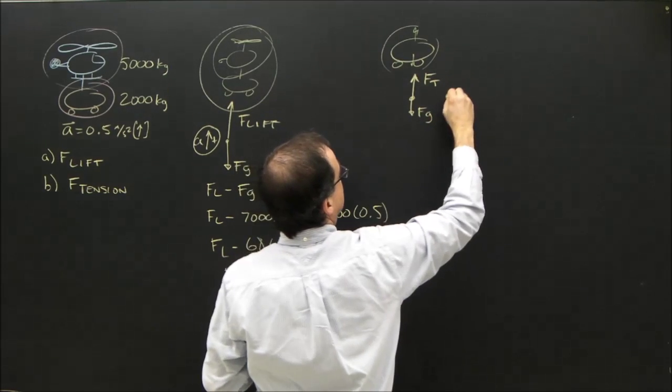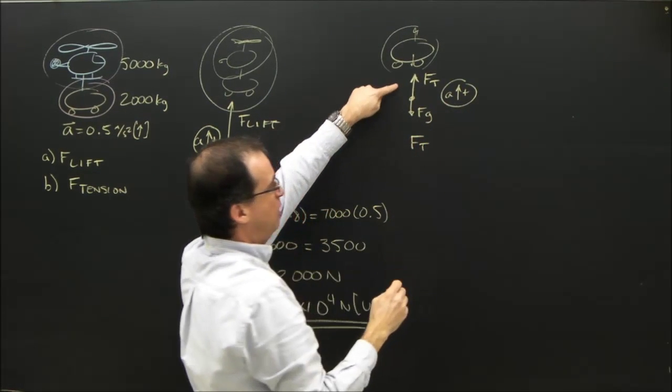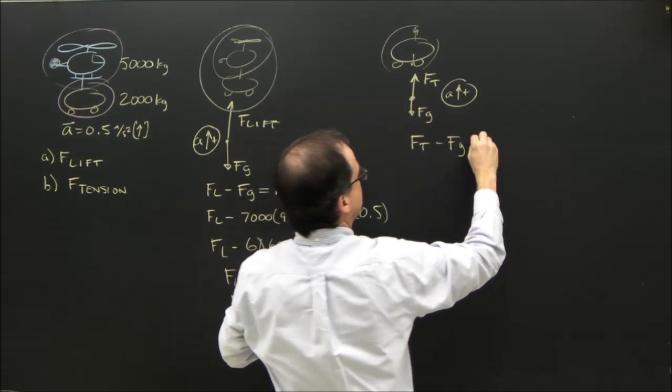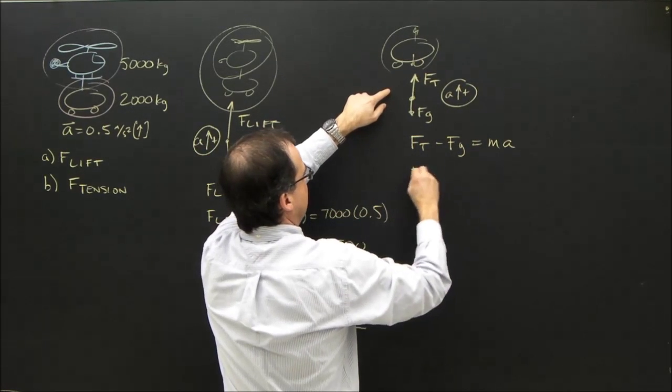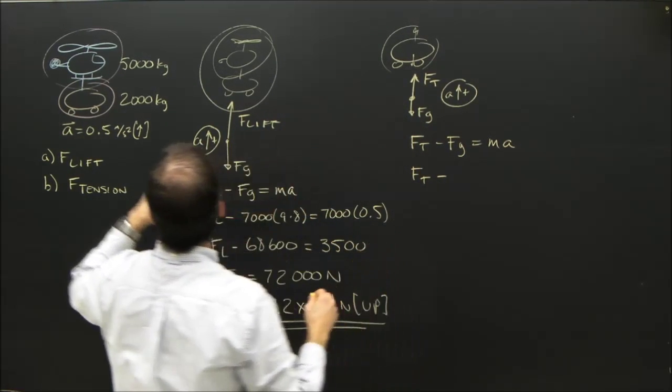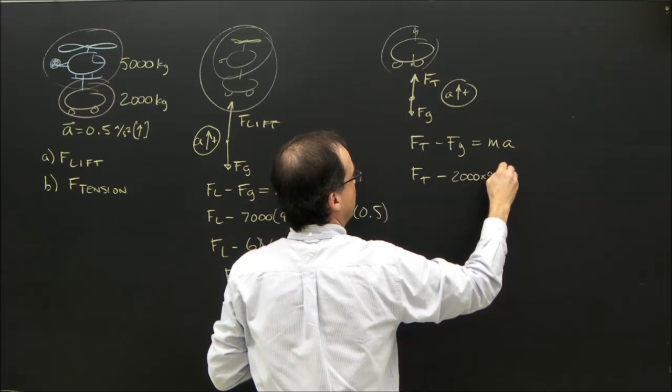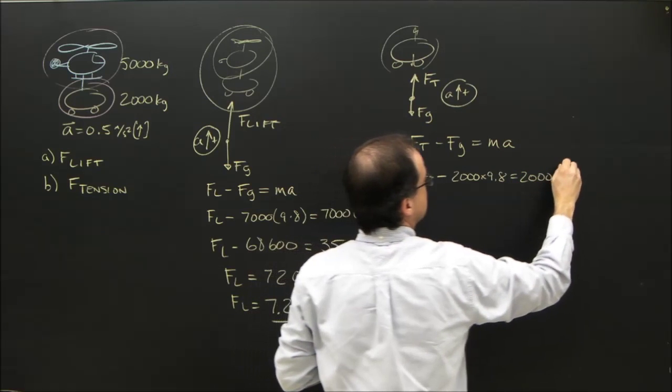So we got acceleration up is positive. So Ft is positive, minus Fg, which is negative, because up is positive, equals MA. So Ft minus Fg, which is 2,000 times 9.8, equals 2,000 times acceleration, which is 0.5. So Ft minus 2,000 times 9.8 is 19,600, equals 1,000.